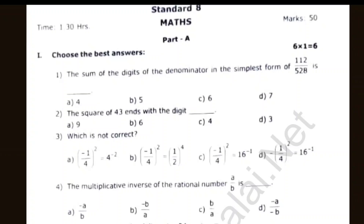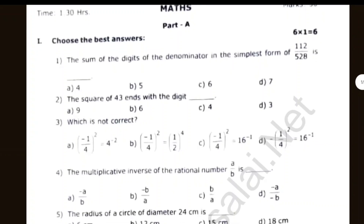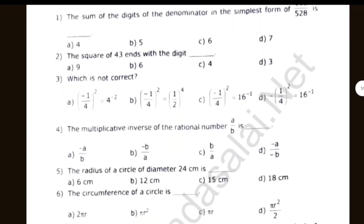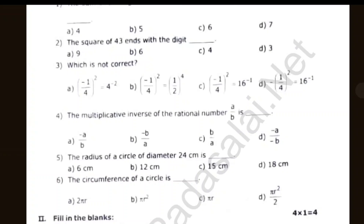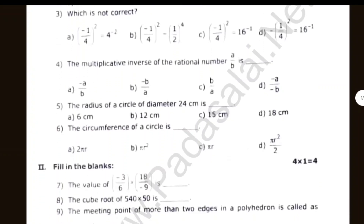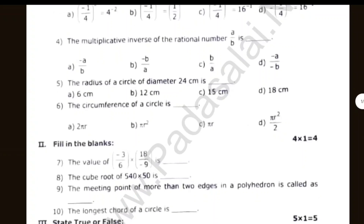The sum of the digits of the denominator in the simplest form — 112 divided by 580 is dash. The square of 43 ends with dash, which is not correct. Multiplicative inverse of the rational number. Radius of the circle with diameter 24 cm — the circumference of the circle is dash.